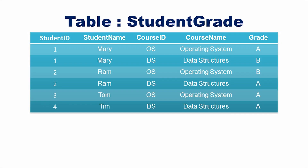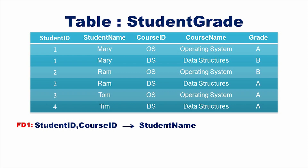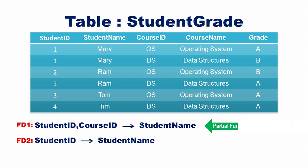Let us take another table, student grade, which has five attributes: student ID, student name, course ID, course name, and grade. Student ID and course ID together determine student name is a functional dependency on the table student grade (FD1). Student ID alone also determines student name (FD2). Hence FD1 is a partial functional dependency.